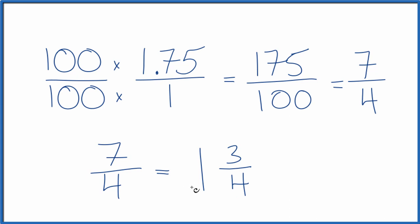So 7 fourths and 1.75, that equals the mixed number 1 and 3 fourths. 1 times 4, that's 4, plus 3, that's our 7.